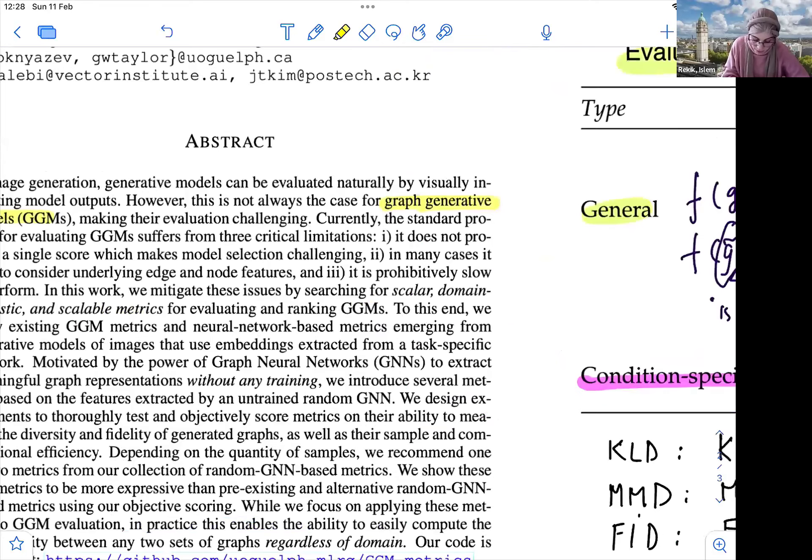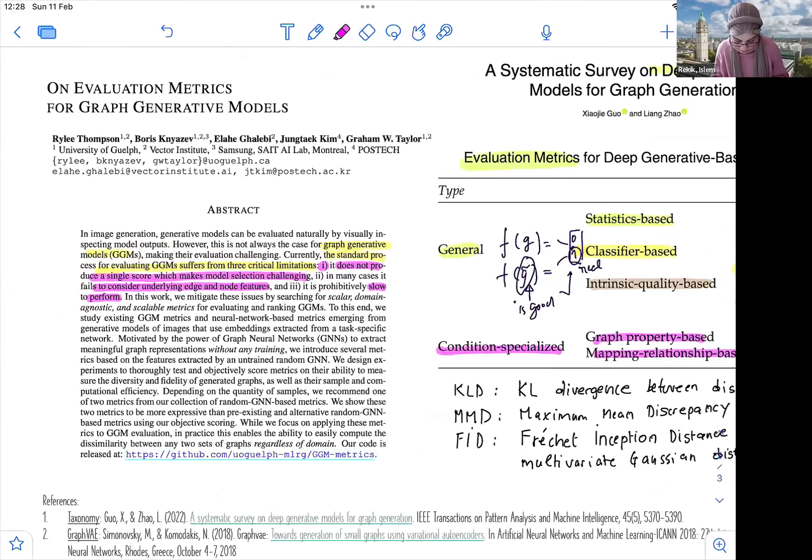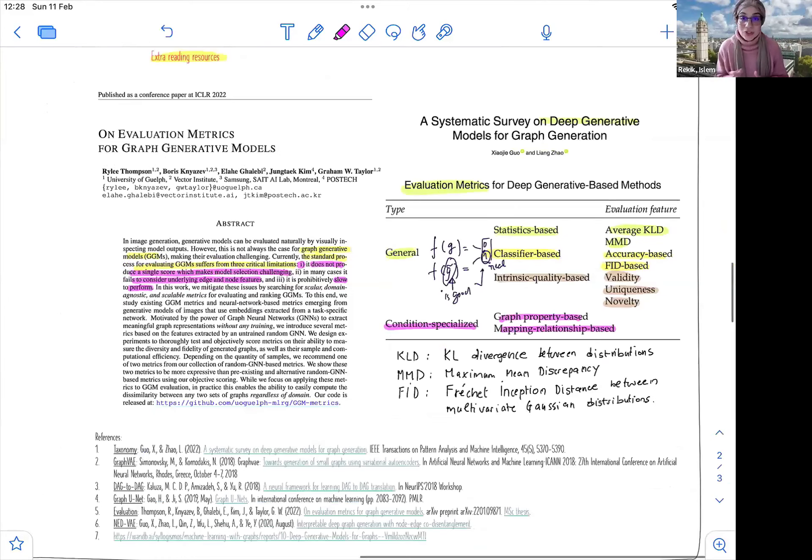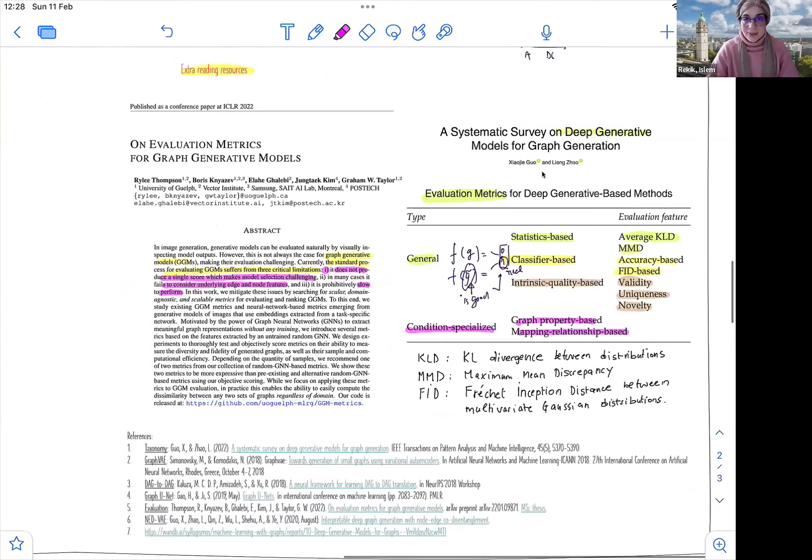First, it does not produce a single score, which makes model selection challenging. And also, it fails to consider underlying edge and node features. And it is very slow. So these are the three key points that were mentioned in this paper. But yeah, so you guys can have a read at this and discover more about how are you going to evaluate your generative GNN models. Great. Thank you.